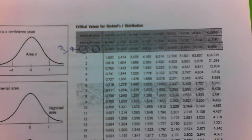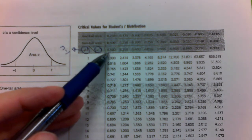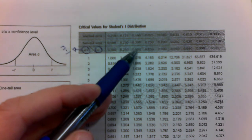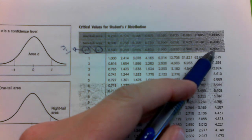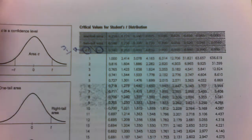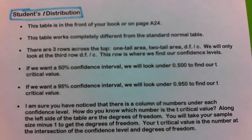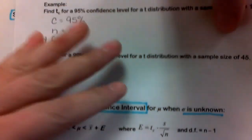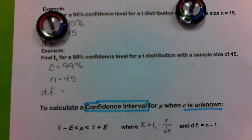We're also concerned with C, which means how confident you are. This column shows 0.500 (50% confident), 0.750 (75% confident), then 80%, 85%, 90%, 95%, 98%, 99%, and 99.9% confident. That confidence level will be given in the problem. This is where we go to locate the number we need to calculate the margin of error.